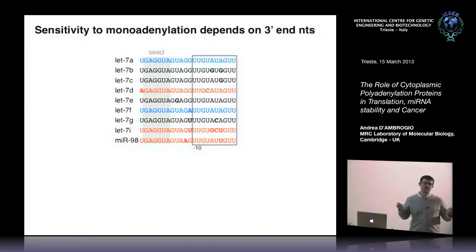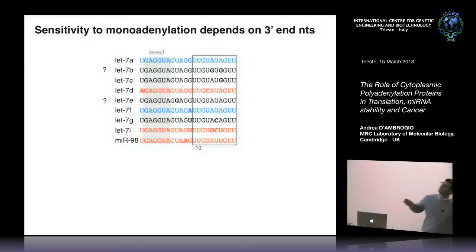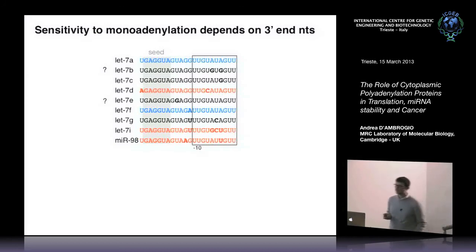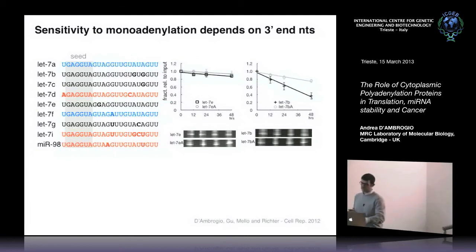Based on this rule, could I predict the effect on other microRNAs not represented in my deep sequencing study? I analyzed let-7b and let-7e. Let-7b has two mutations, so my expectation was that it would be regulated by monoadenylation, while let-7e would not be. Transfecting them into cells and monitoring stability confirmed this: let-7e is stable and remains stable upon A addition, while let-7b — with two mutations — is unstable and gets stabilized.